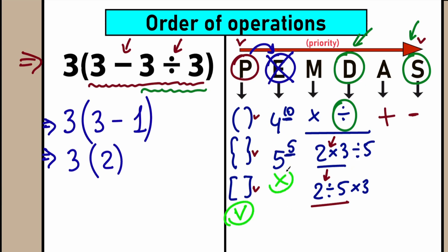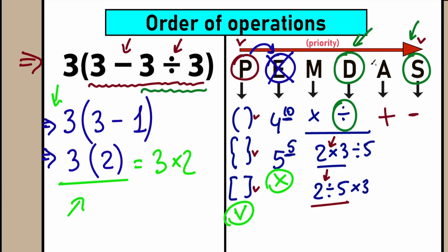We complete the parentheses part. We don't have exponents, so we skip that. Right now we have 3 times 2, which equals 6. So according to PEMDAS, the correct answer is 6. In most cases — about 90% of the time — you only need the order of operations when you have a complicated mixture of subtraction, division, and multiplication. Once you've simplified, the expression becomes easy. Just look at PEMDAS and identify which letter has the higher position.